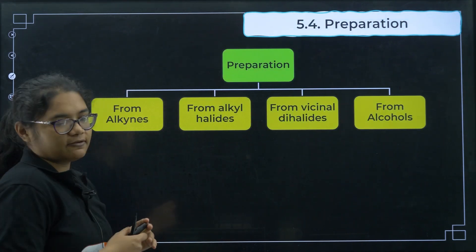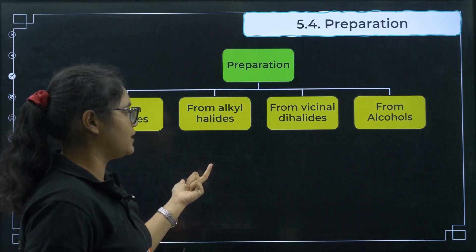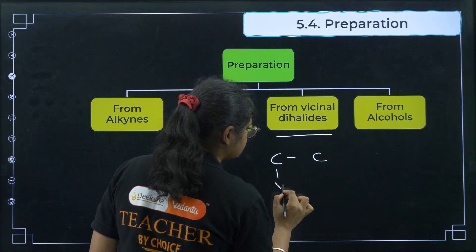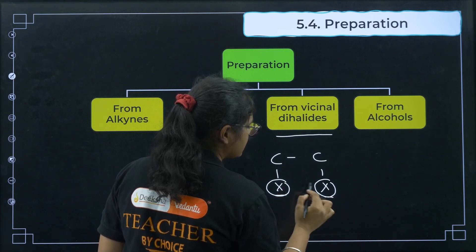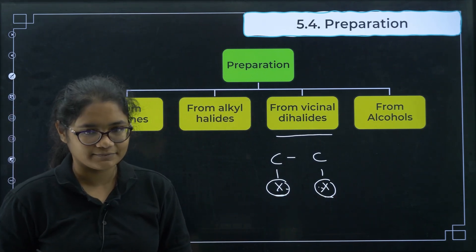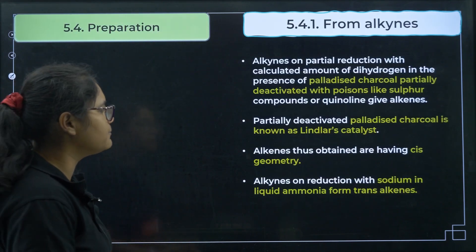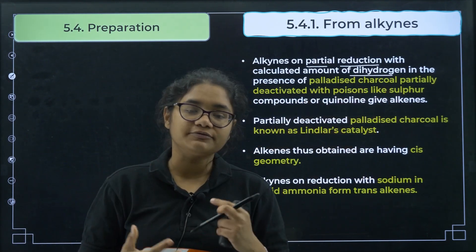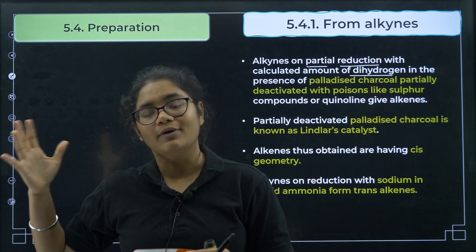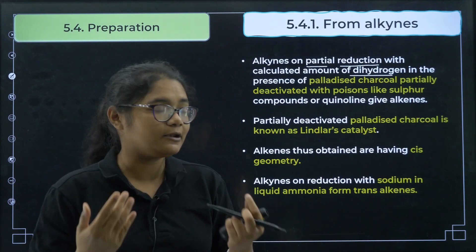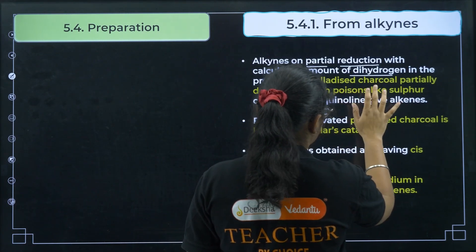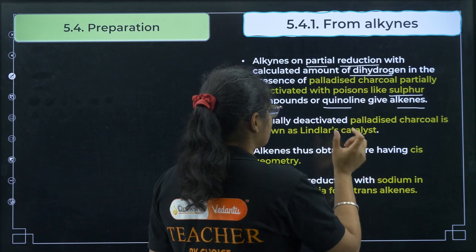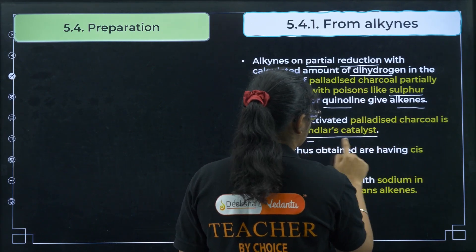There are four methods of preparation. First, from alkynes: alkynes undergo partial reduction with a calculated amount of dihydrogen. Too much hydrogen converts alkynes to alkanes. In the presence of palladised charcoal partially deactivated with poisons like sulphur compounds or quinoline — known as Lindlar's catalyst — alkynes give cis-alkenes.